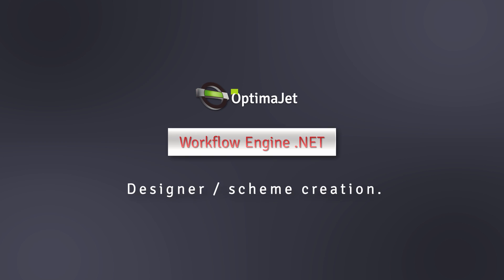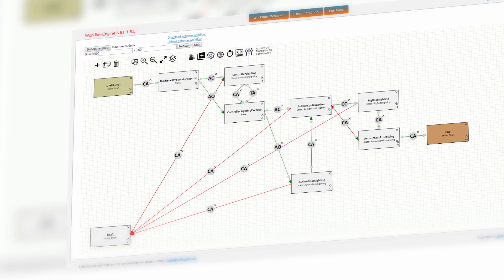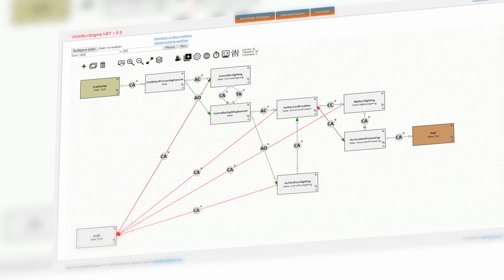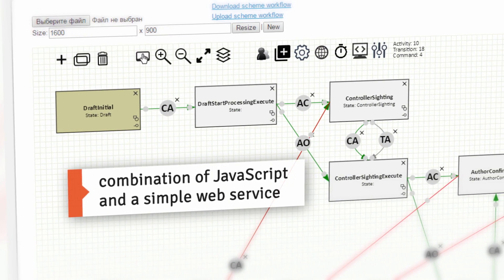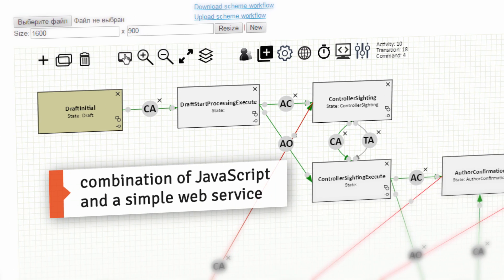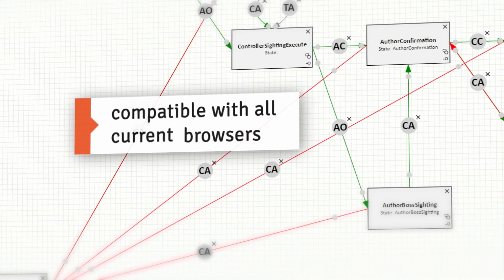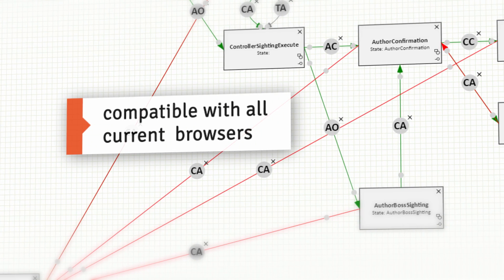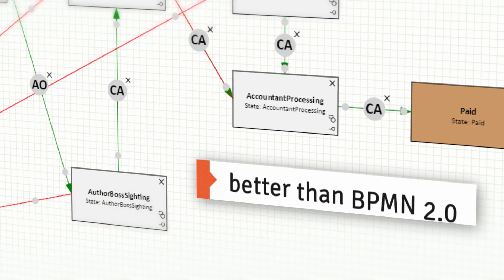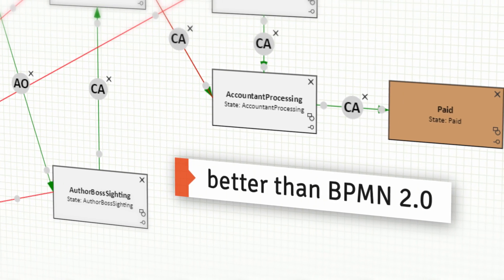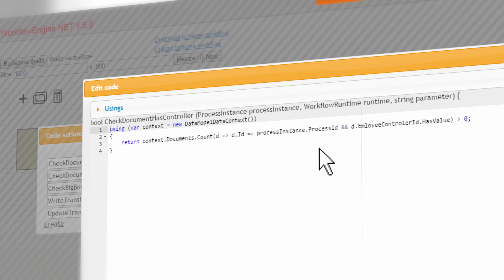In the designer, you can create a whole process scheme or modify one. Our designer is a combination of JavaScript and a simple web service, which is why you can integrate it into any web project. The designer is compatible with all current browsers. We use our own model for notation, which is more compact and better adapted to developers' needs than BPMN 2.0. You can edit simple code right in the designer.